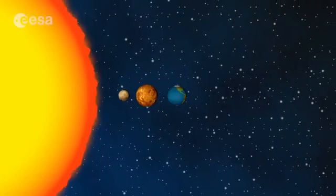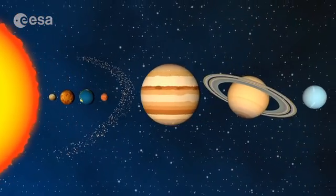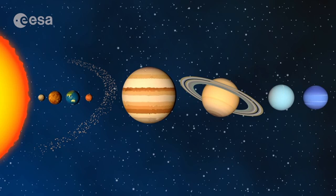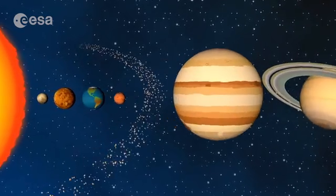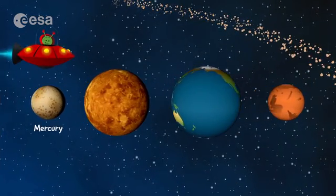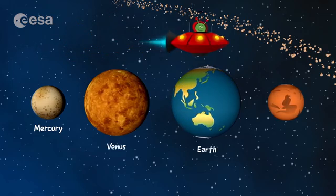Now, Earth is not alone. It is just one of eight planets that orbit the sun. Let's have a look at them. The four small rocky planets closest to the sun are Mercury, Venus, Earth, and Mars.